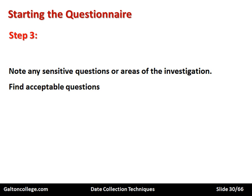Step three: note any sensitive questions or areas of the investigation and find acceptable ways to ask them. Some questions may be too sensitive — political, moral, or relating to some aspect of the business. For example, asking workers what they feel about management may be too sensitive. Workers are intimidated — they don't want to lose their jobs or upset management, so they may give false answers. The information has to be sought through questions which are acceptable. It's a particularly tricky area.